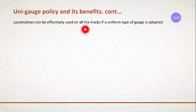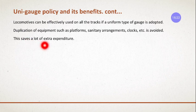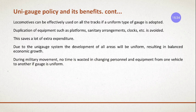Locomotives can be effectively used across all tracks. Previously, a meter gauge engine could not run on a broad gauge track due to the difference in width. Under unigage, engines can be used efficiently everywhere. Duplication of equipment such as platforms, sanitary facilities, clocks, and staff is avoided, saving extra expenditure and time. Development of all areas will be uniform, resulting in balanced economic growth. During military movements, no time is wasted changing personnel and equipment between vehicles when the gauge is uniform.